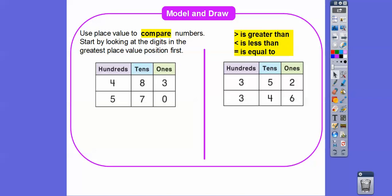So we want to compare. Which one is bigger? So this one, we start with the greatest place value, which is the hundreds right here. So we start here. Four is less than five, so four hundreds is less than five hundreds, which just means this number here, 483, is going to be less than 570 right there.